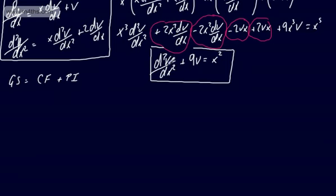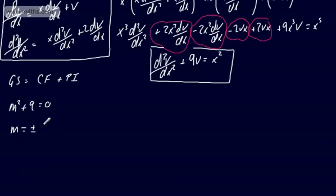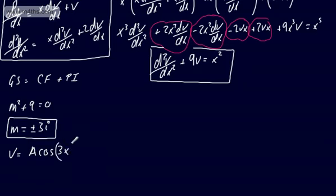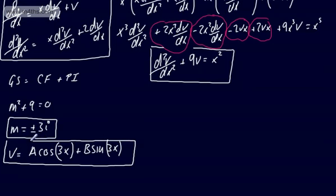For d²v/dx² + 9v = 0, we use the auxiliary equation: m² + 9 = 0, so m² = −9, giving purely imaginary roots m = ±3i. This is the third type of differential equation we introduced earlier — if you haven't seen that, please review it. The complementary function is therefore v = A cos(3x) + B sin(3x).